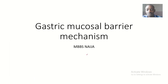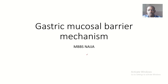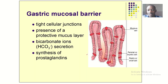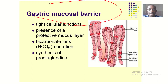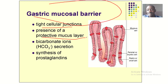We're talking about the gastric mucosal barrier mechanism. This is basically the lining of the mucosal layer that protects the stomach from harsh acids and everything. Looking at this picture, the gastric mucosal barrier consists of tight cellular junctions and the presence of a protective mucus layer.